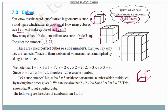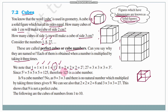These numbers 1, 8, 27 are called perfect cubes or cube numbers. Each of them is obtained when a number is multiplied by taking it three times. For example, 1 into 1 into 1 is 1 cube. Eight can be expressed as 2 into 2 into 2, which is 2 cube. Twenty-seven is 3 into 3 into 3, which is 3 cube — 3 times 3 is 9, and 9 times 3 is 27.